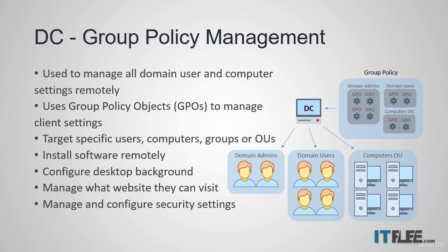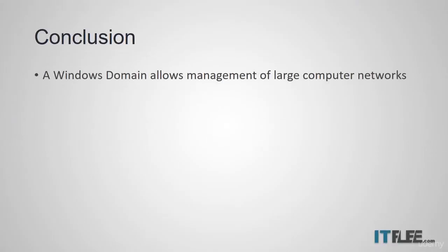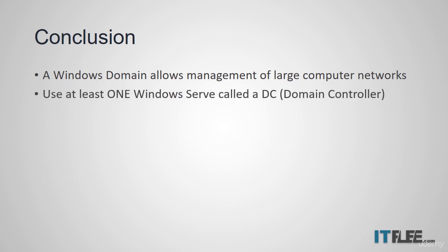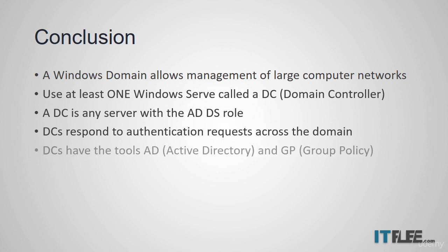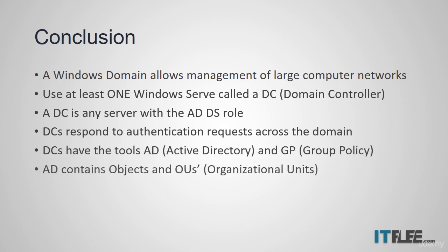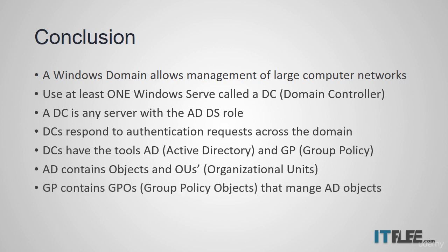To recap what we've covered in this lecture: a Windows domain allows management of small or large computer networks. They use a Windows server called a DC or domain controller. A DC is any server that has the Active Directory Domain Services role installed. DCs respond to authentication requests across the domain and have the tools Active Directory and Group Policy. Active Directory contains objects and OUs. Group Policy contains GPOs and manages settings for AD objects.